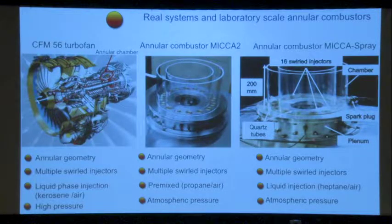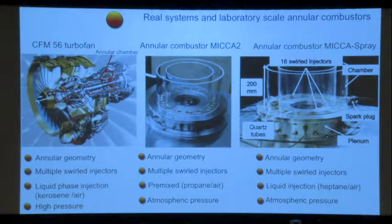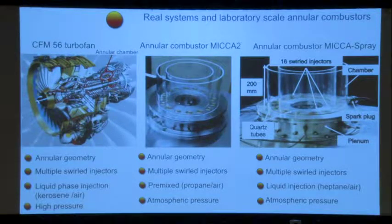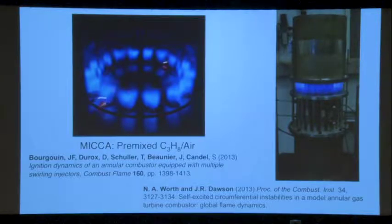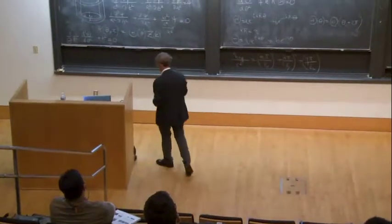We have a plenum which brings the premixed air and propane to these injectors. We now also have liquid injection — heptane and air. The chamber has 16 swirled injectors and a spark plug to start combustion. The plenum has plugs to put microphones, and we can also place microphones on the chamber using waveguides — the technique I described yesterday. This is how it looks when operating. The spark plugs become red, and in some cases we were igniting from above so we didn't have any obstacles inside the combustor.